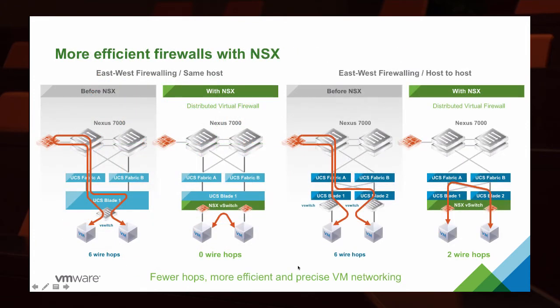With same-host traffic between firewalls in a conventional world, you'd have to move from a virtual machine out into the server, out into the fabric, into the top of rack, and then all the way back — about six hops. With NSX, however, if it's on the same host, you're looking at zero hops. The virtual tunnel endpoint lives inside of that host, and that's where the firewall exists. The machine accesses that firewall, the firewall protects the traffic, and it all happens without ever touching the fabric or the top-of-rack switch — so it's much faster.